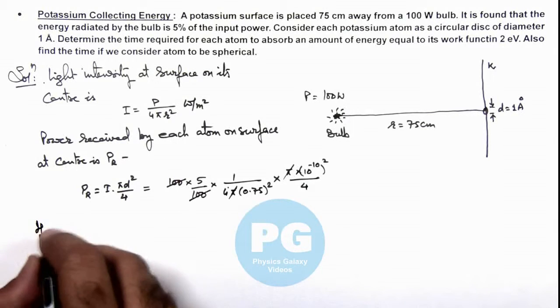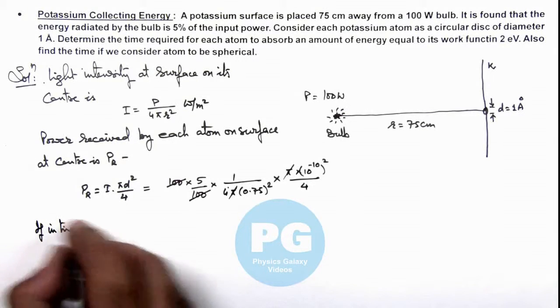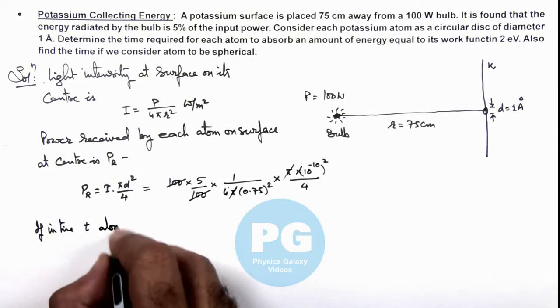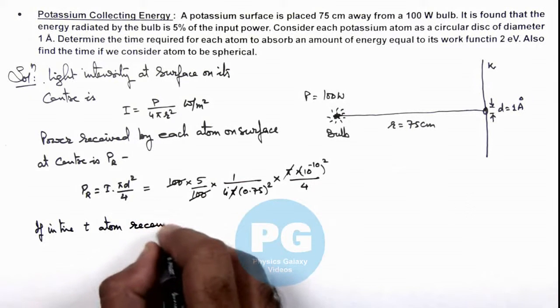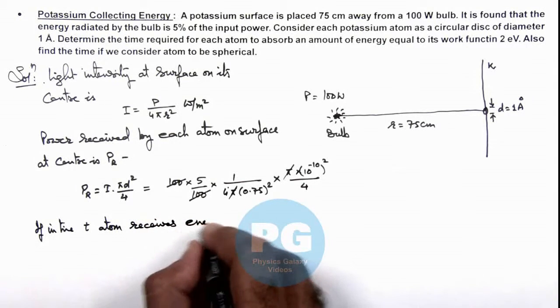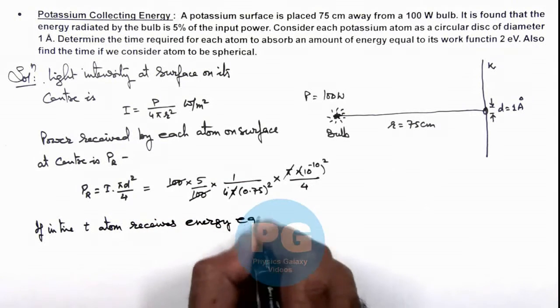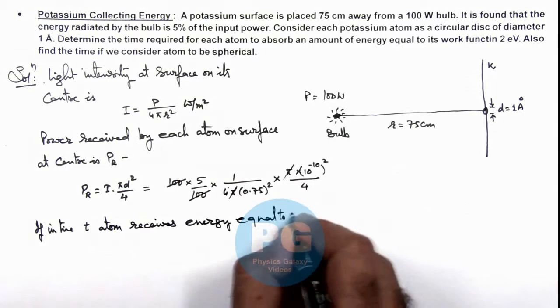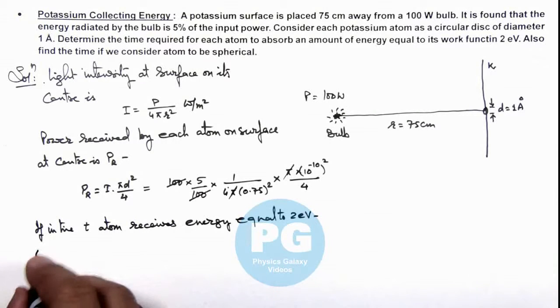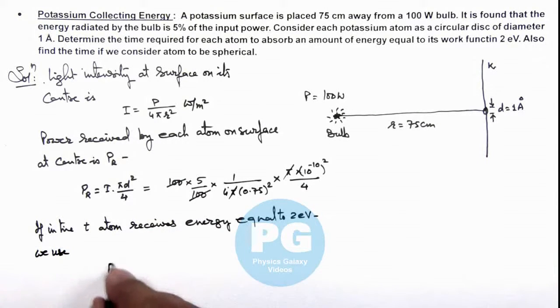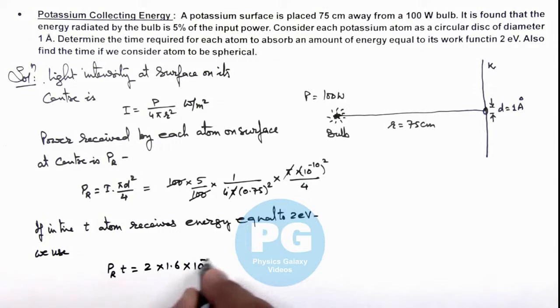If in time t the potassium atom receives energy equal to 2 electron volts, which is its work function, we use: power received multiplied by time equals 2eV = 2 × 1.6 × 10⁻¹⁹ joules.